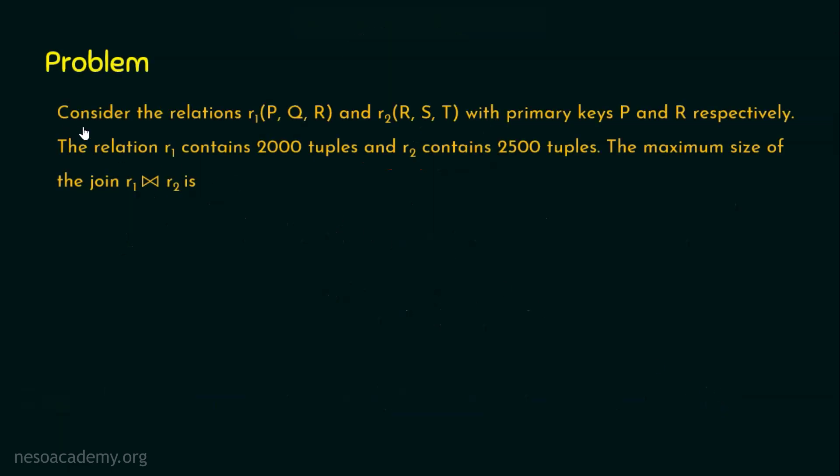The question is: consider the relations R1 with the attributes P, Q and R, and relation R2 with the attributes R, S and T, with the primary keys P and R respectively. The relation R1 contains 2000 tuples and relation R2 contains 2500 tuples. The maximum size of the join R1 join R2 is, and this question was asked in Gate Computer Science in the year 2005.